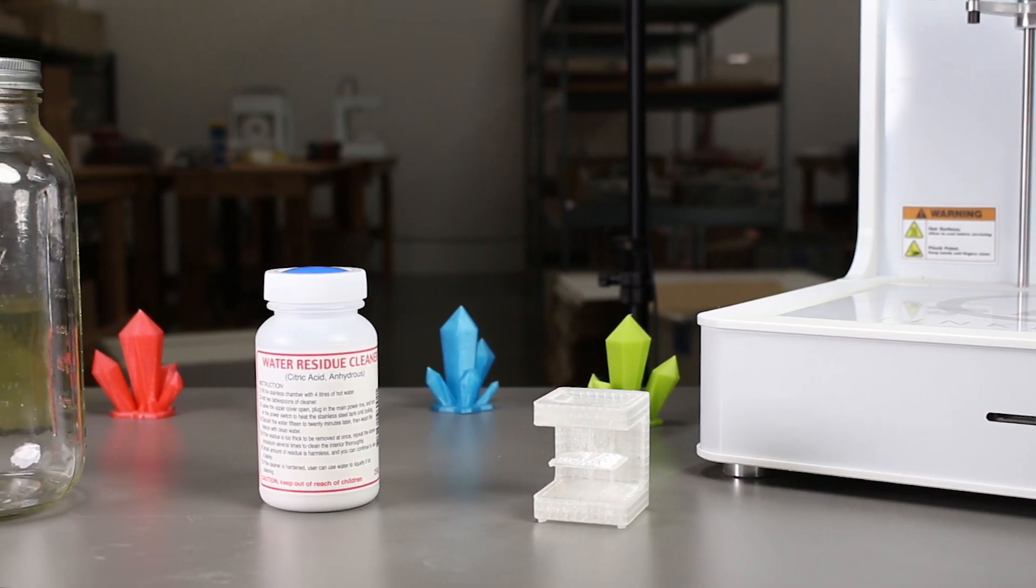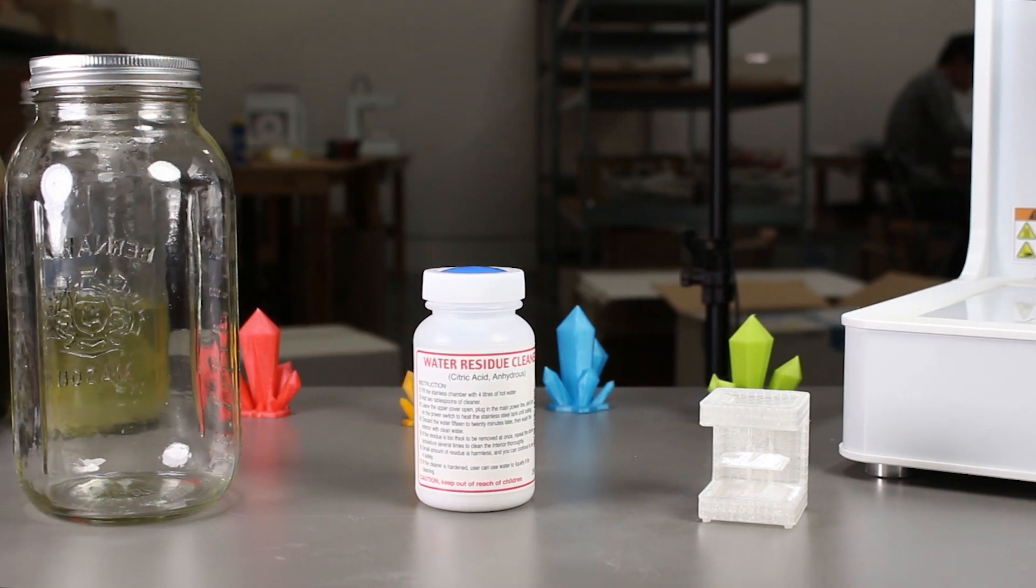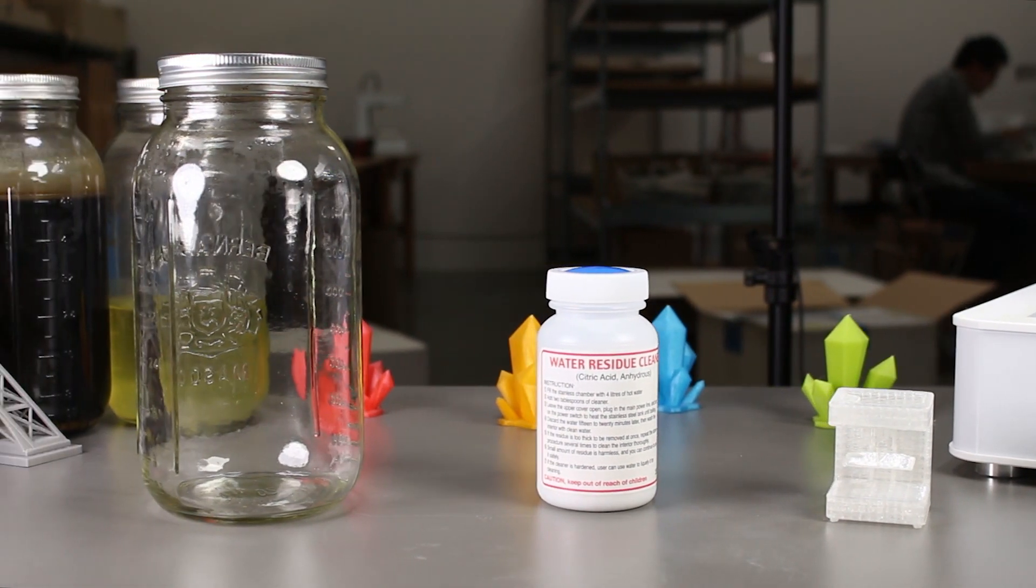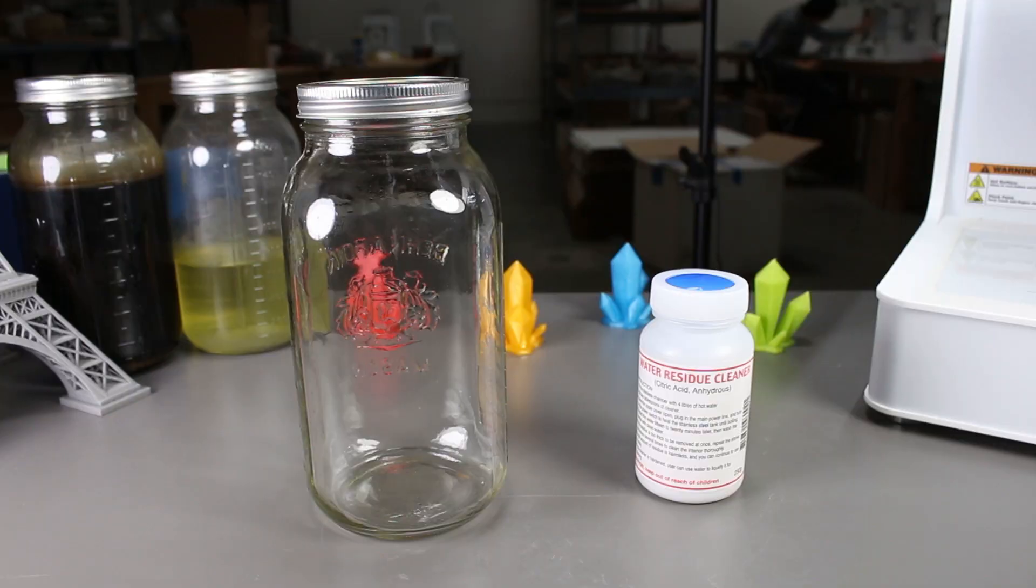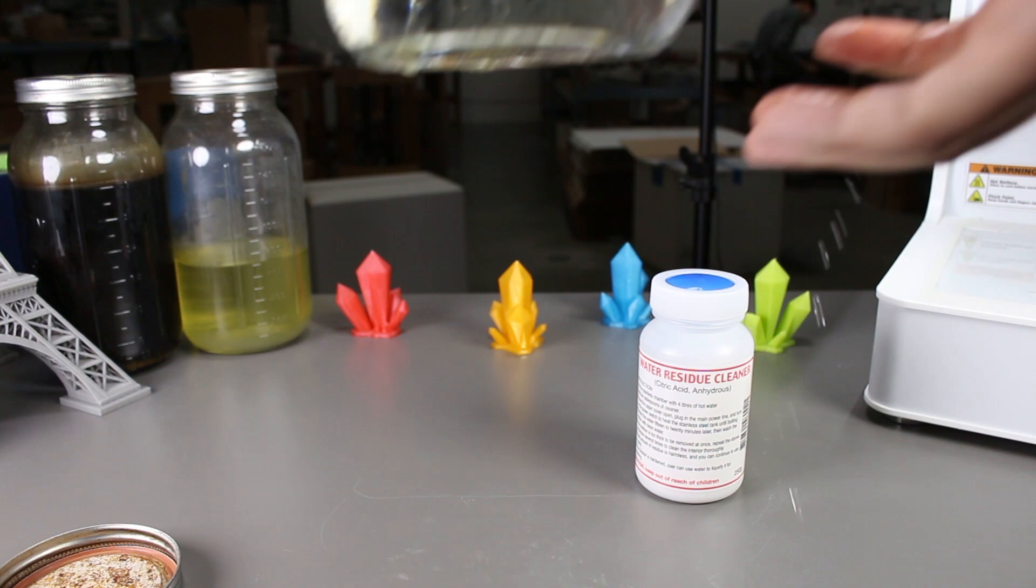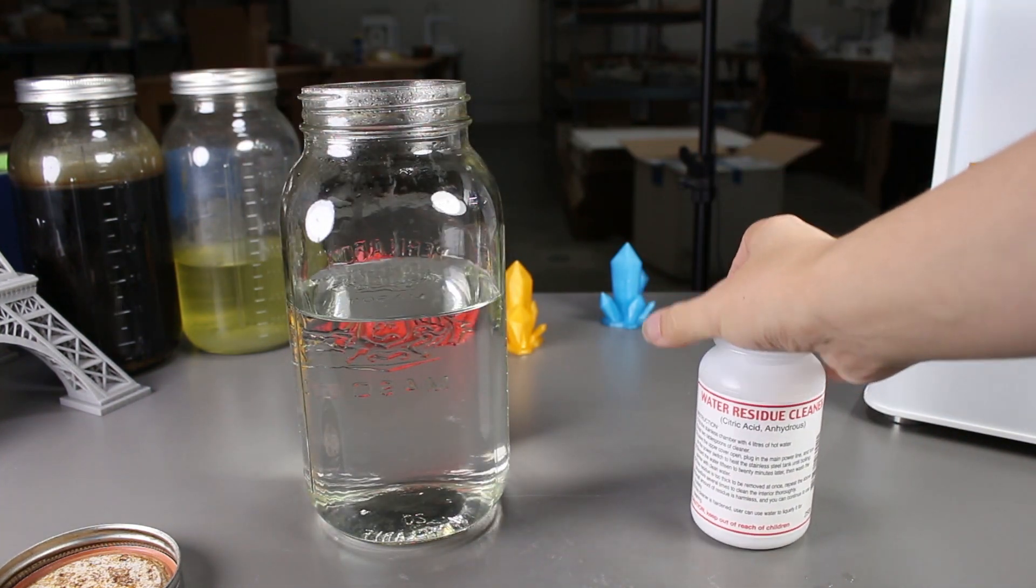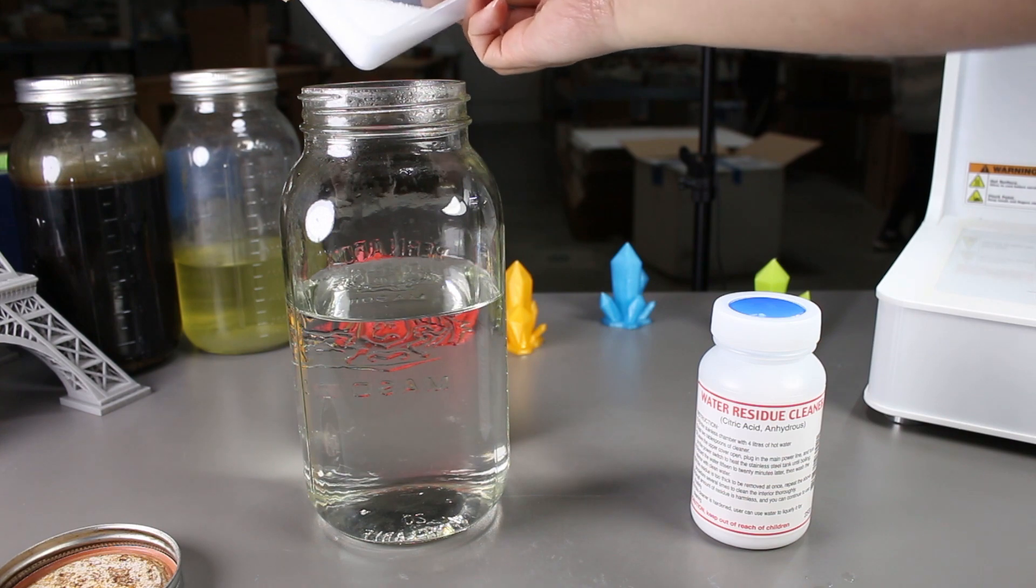One of our subscribers asked if we tried pure citric acid, so we've obtained some powder, which we will try in this experiment. Let's start. The instruction says we need to use 4 liters of water for this experiment and 2 tablespoons of the powder, but since I don't have 4 liters of water, we'll just adjust accordingly.